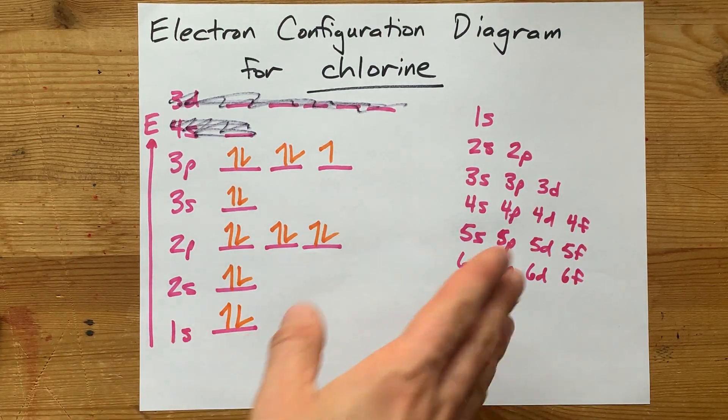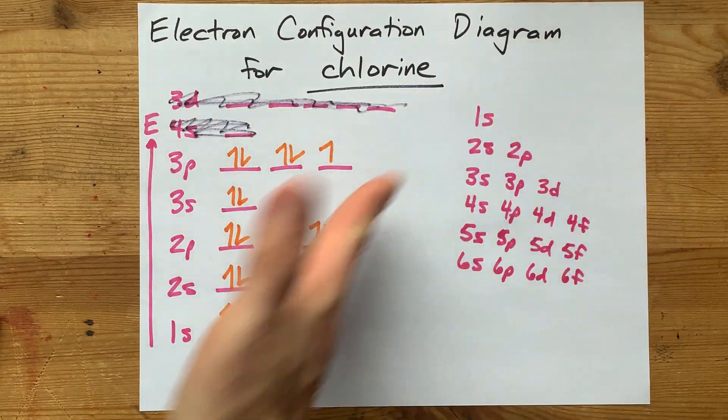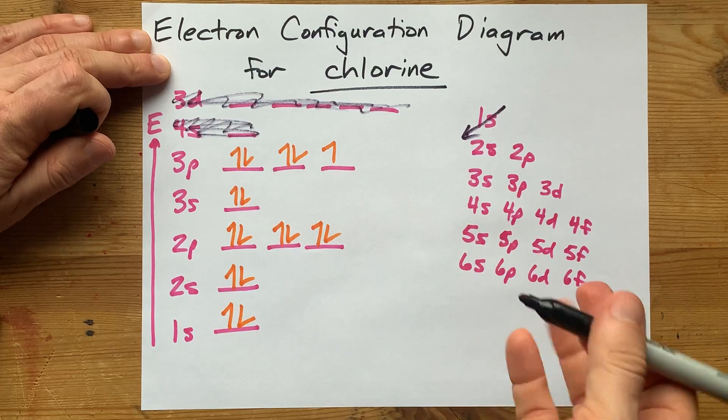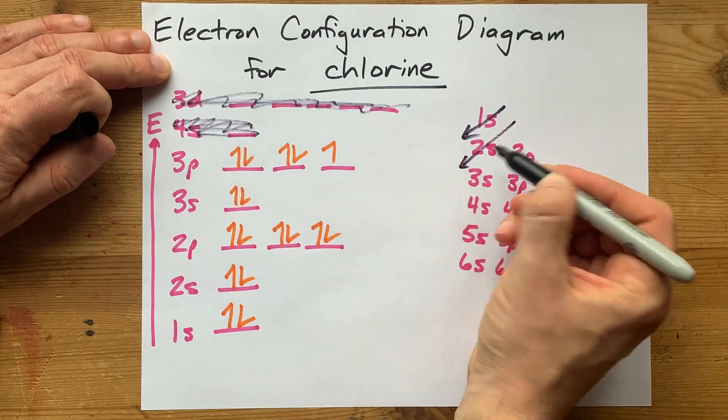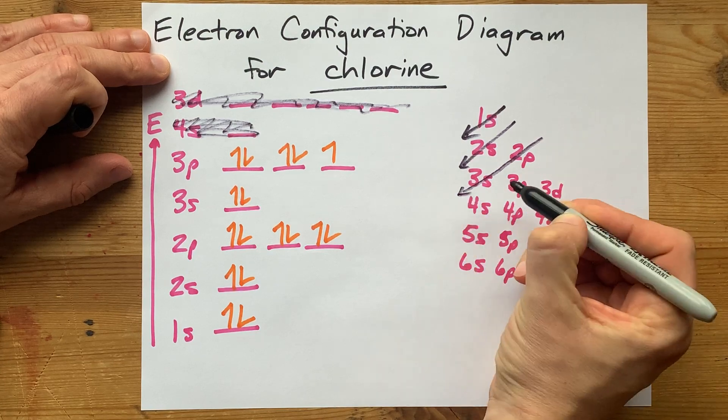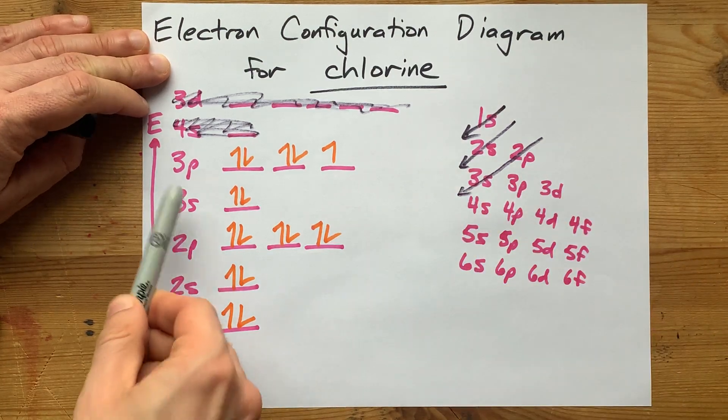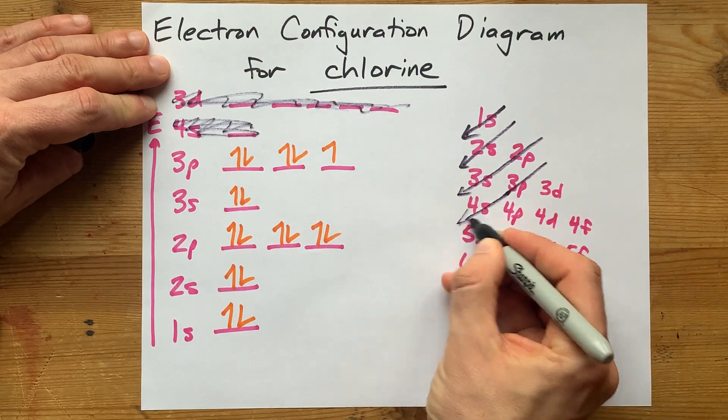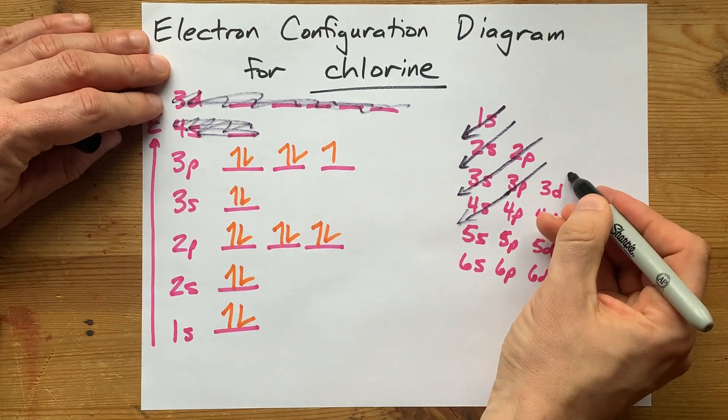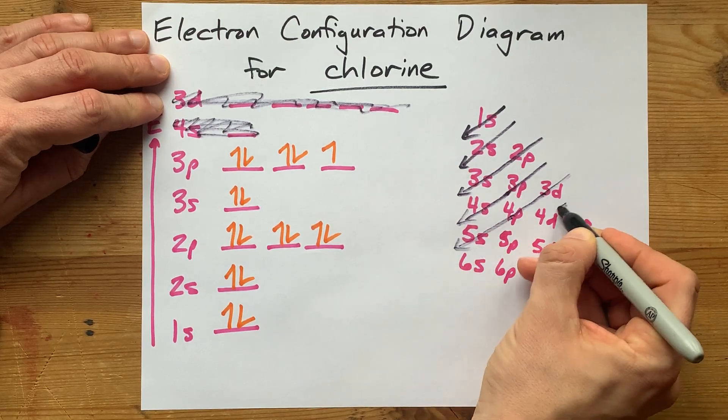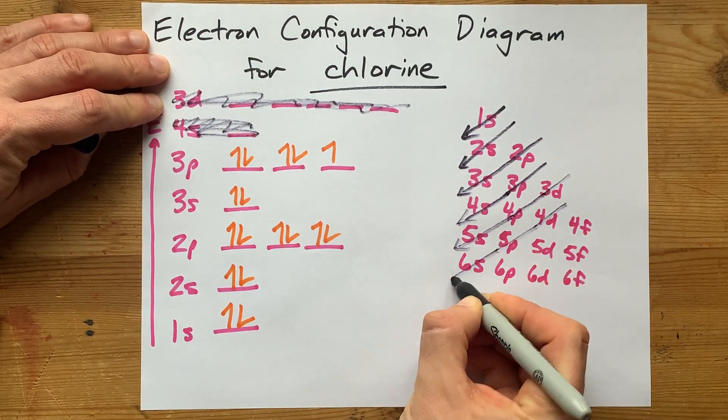And then to figure out what ones go first, you draw diagonal lines through these. So, do your 1s first. We did. Do your 2s. We did. Do your 2p and then your 3s. Do your 3p and your 4s. Then 3d, 4p, 5s, 4d, 5p, 6s.